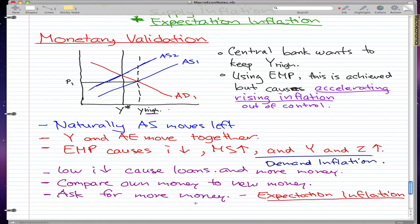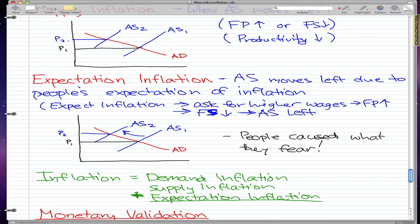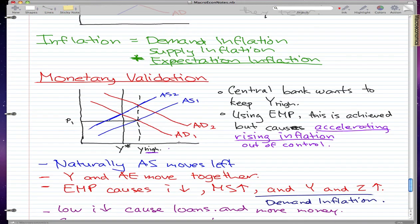Remember that the government uses EMP to cause all this to happen, demand inflation. And in demand inflation, what actually occurs is that the aggregate demand moves right to aggregate demand 2, AD2. We just did this in demand inflation. The AD moves, so using EMP to make the AD move.